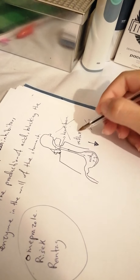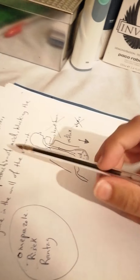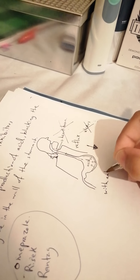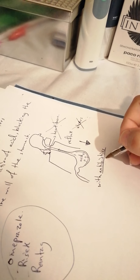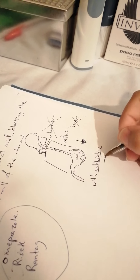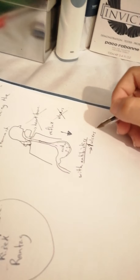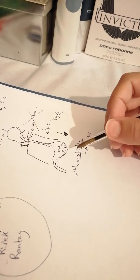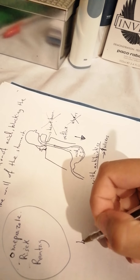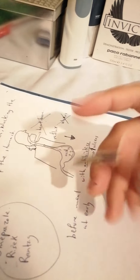Most doctors order omeprazole and PPIs together with antibiotics, because antibiotics can lead to ulcers. Because of that, it's very important to take omeprazole, and usually it is taken before a meal — early in the morning before you eat anything.